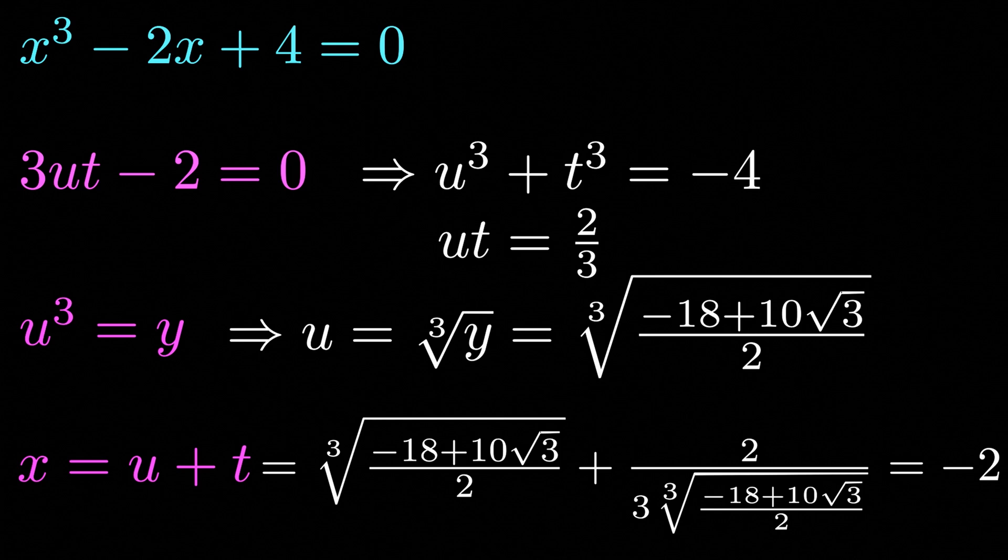So we have one solution, but notice we have a cubic polynomial, so we know that there are still two other solutions to find. So now that we have this information, how can we get the other two solutions?